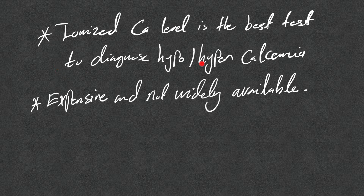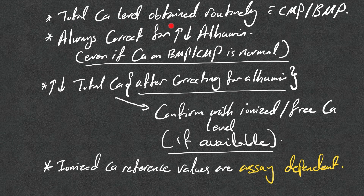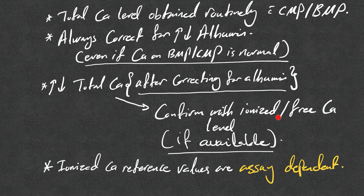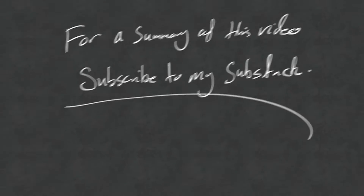Ionized calcium level is the best test to diagnose hypo- or hypercalcemia, but it's expensive and not widely available. Total calcium is obtained routinely with CMP or BMP, and we always need to correct it for albumin — even if the calcium level is normal. After correcting for albumin, if there is evidence of hyper- or hypocalcemia, confirm it with ionized or free calcium level if available. Note that ionized calcium reference values are assay-dependent and may differ between facilities.